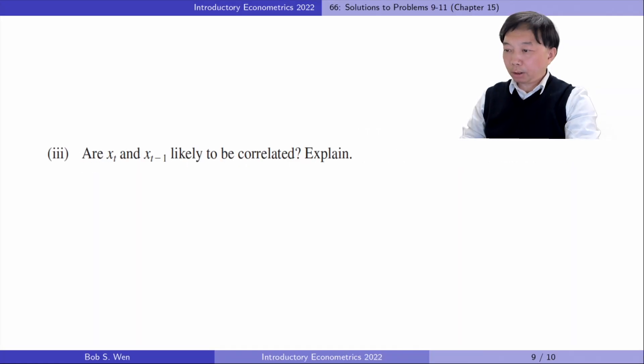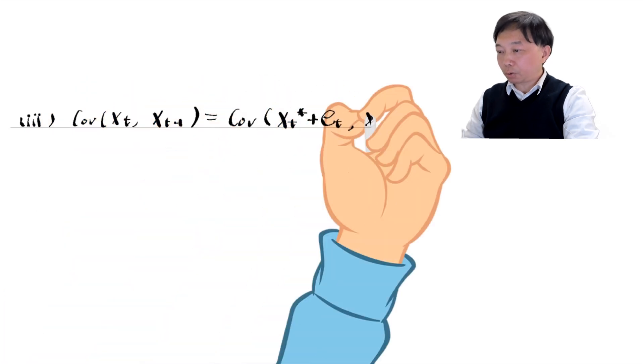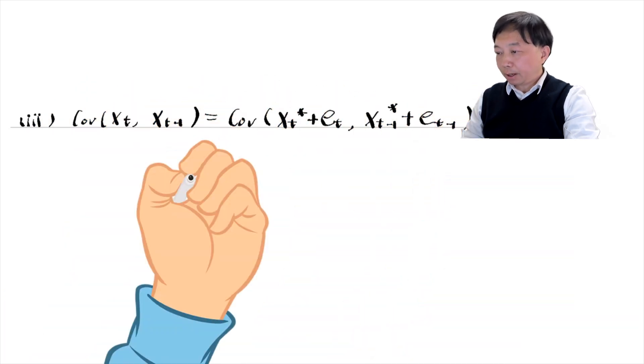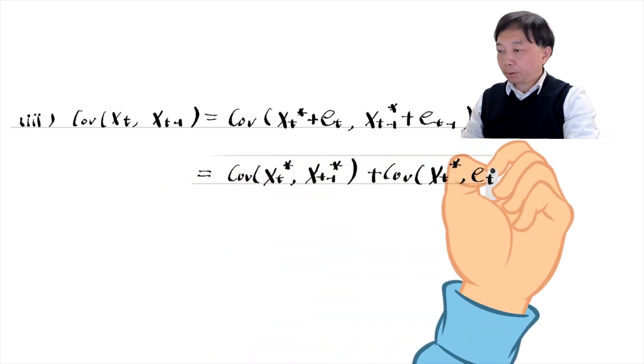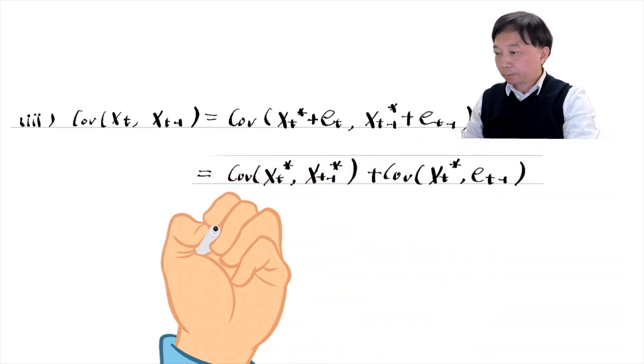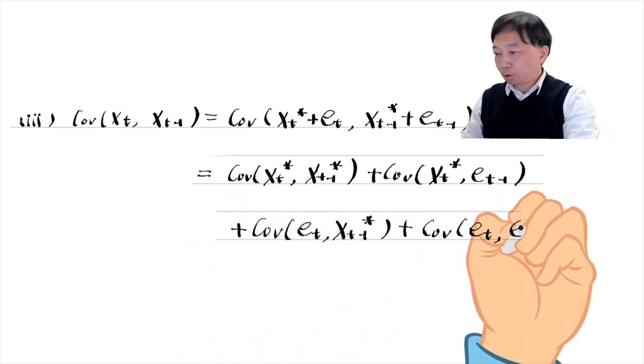In part 3, are xt and xt minus 1 likely to be correlated? Explain. We can write out the covariance between xt and xt minus 1. The measurement errors are likely to be positively correlated for most economic time series. So xt and xt minus 1 are likely to be correlated.